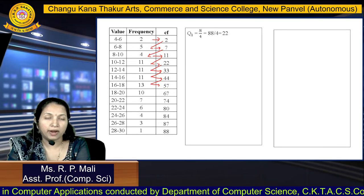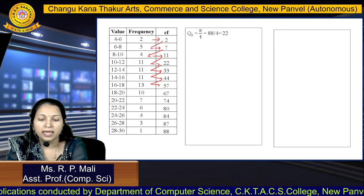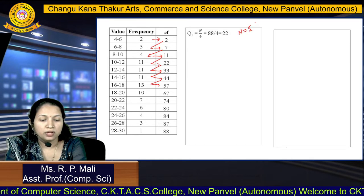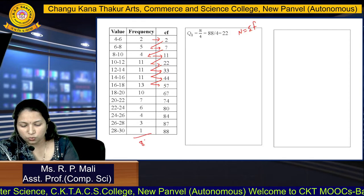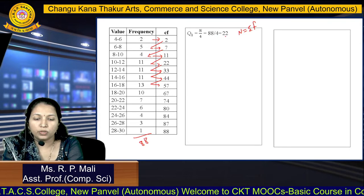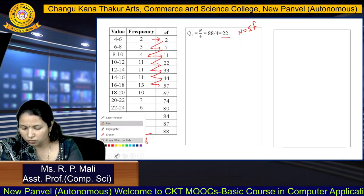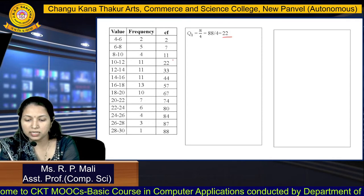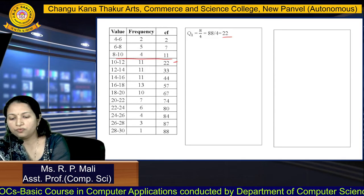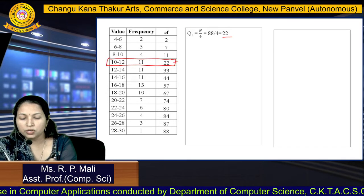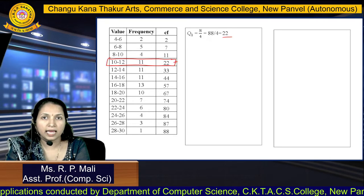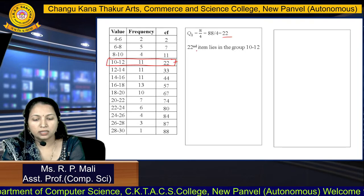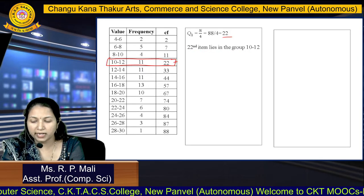We apply the formula to find the first quartile item: N by 4. Your N is the summation of frequency. The summation of this frequency is 88. So N by 4 equals 88 by 4, which is 22. You are going to find this 22 in the cumulative frequency. You can see 22 here, so your first quartile item lies in the class 10 to 12.